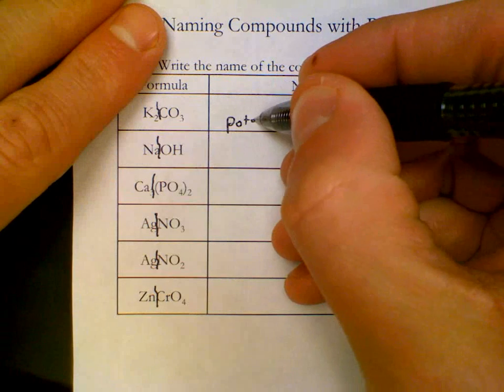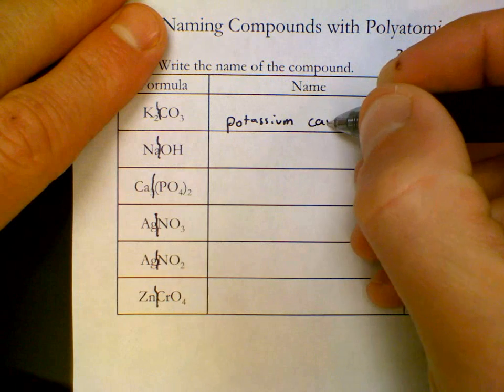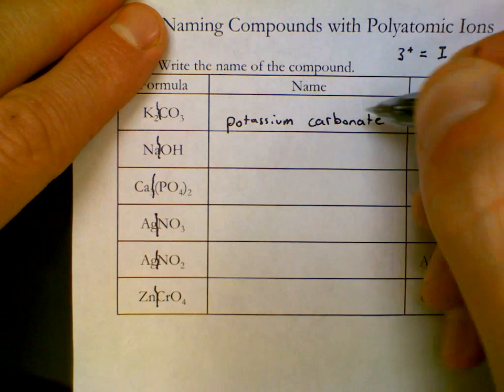K is called potassium. It gets the full atom name. CO₃ is carbonate, a polyatomic ion.